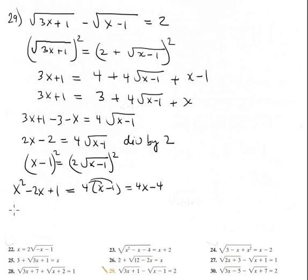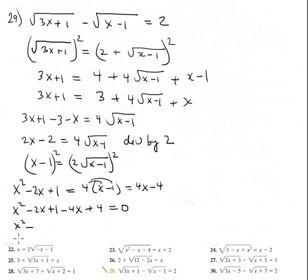This is a quadratic equation: x squared minus 2x plus 1 minus 4x plus 4 equals 0, simplifying to x squared minus 6x plus 5 equals 0.